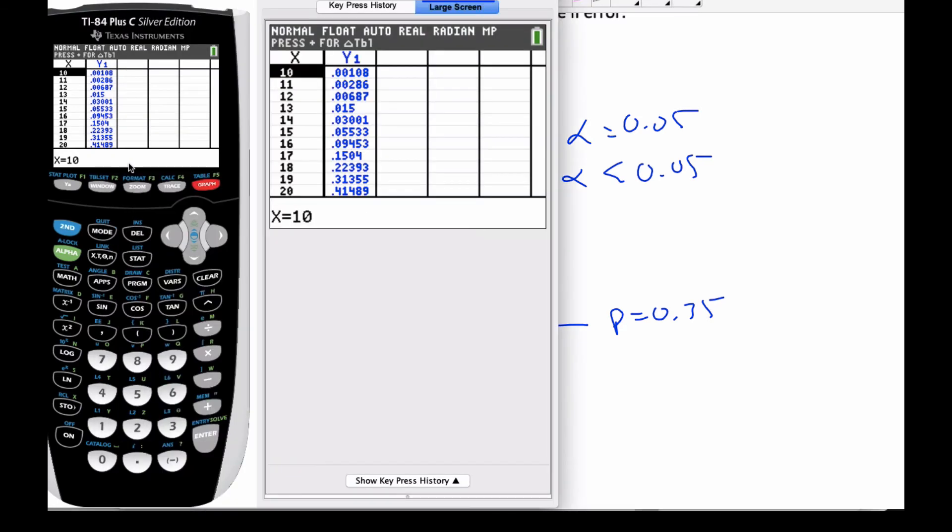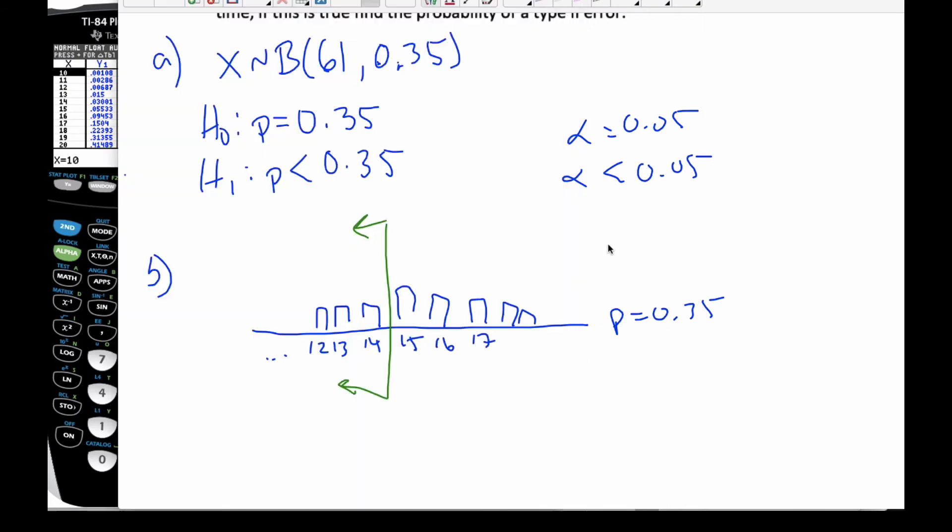It's not 15. Because at 15, it's over 5%. I want this probability to be less than 5%.